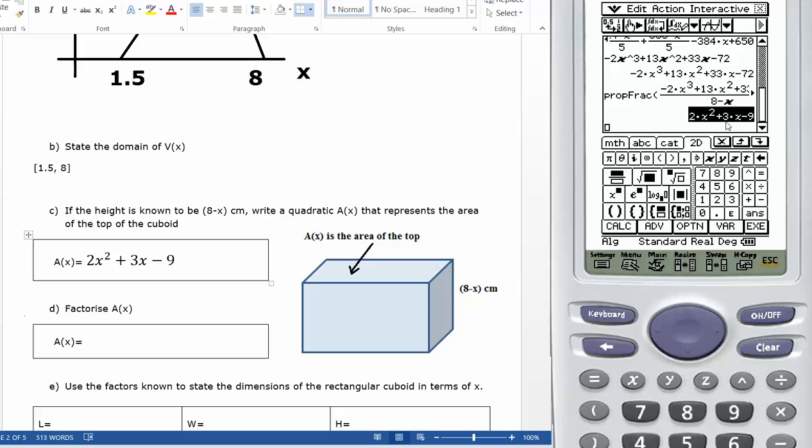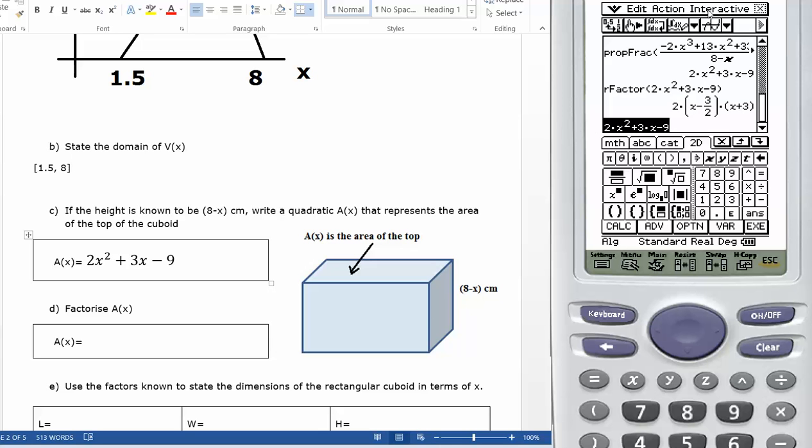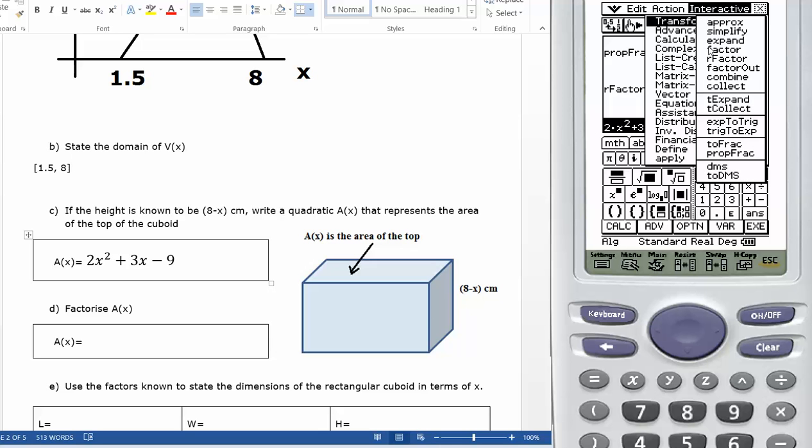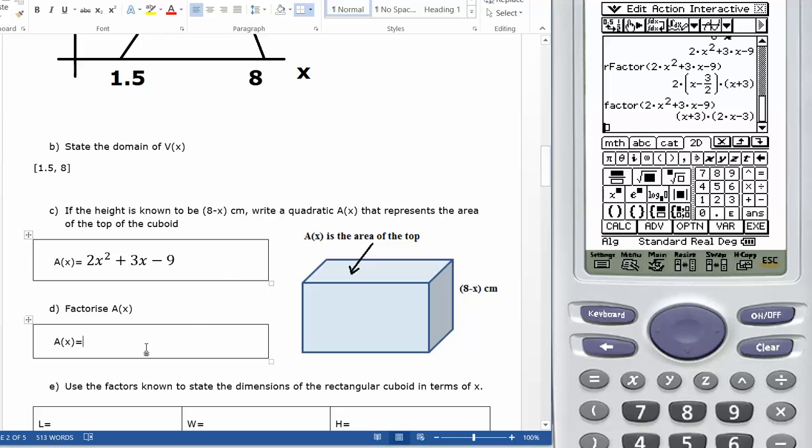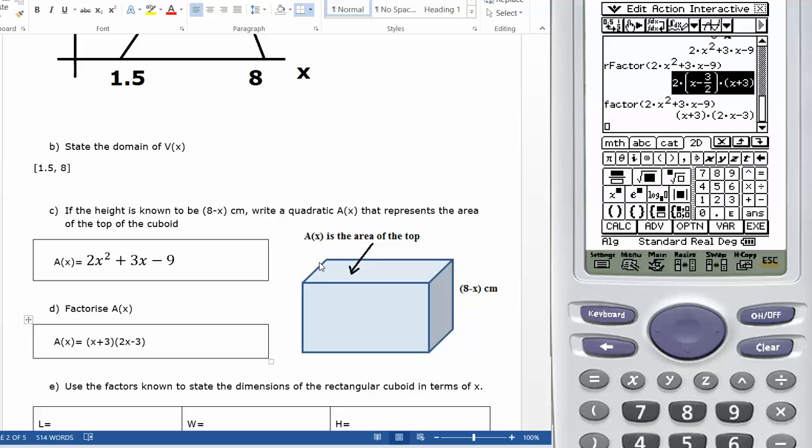Factorize that. So I'll take that into a new line and interactive transform R factor. So I might do that again and not do an R factor because it took out the common factor. So I'll just do interactive transform factor. And there it was. So I've got x plus 3 and 2x minus 3. Or I could have written 2x minus 3 onto an x plus 3. Either is acceptable for part D.